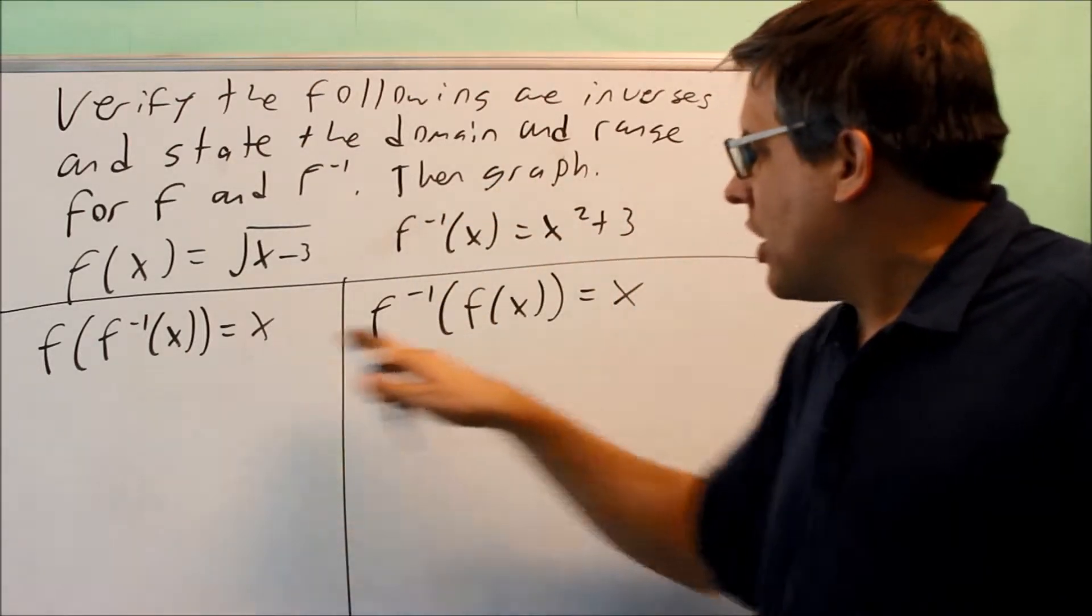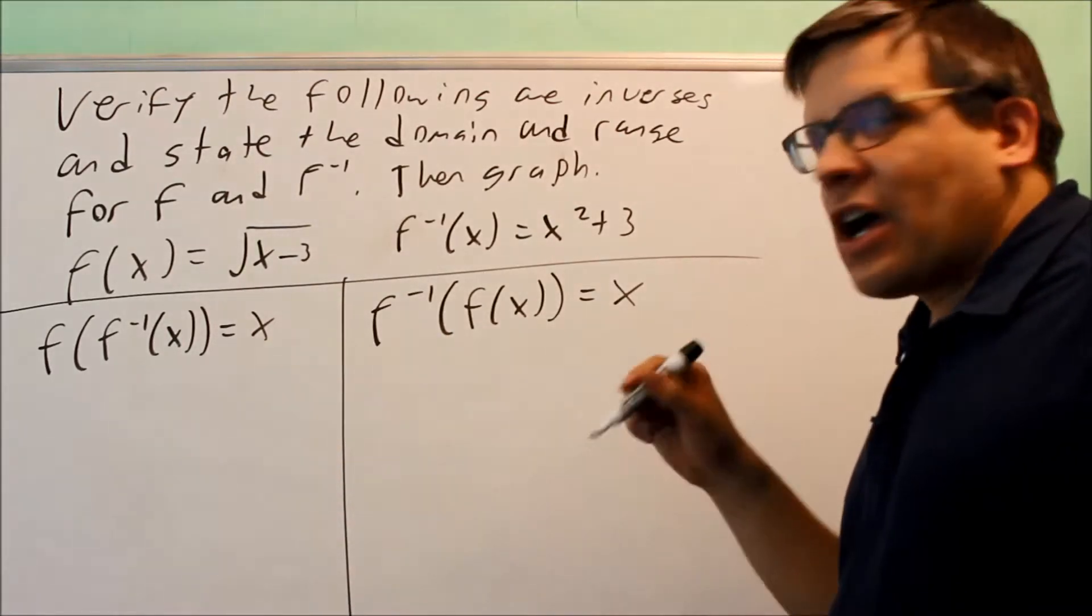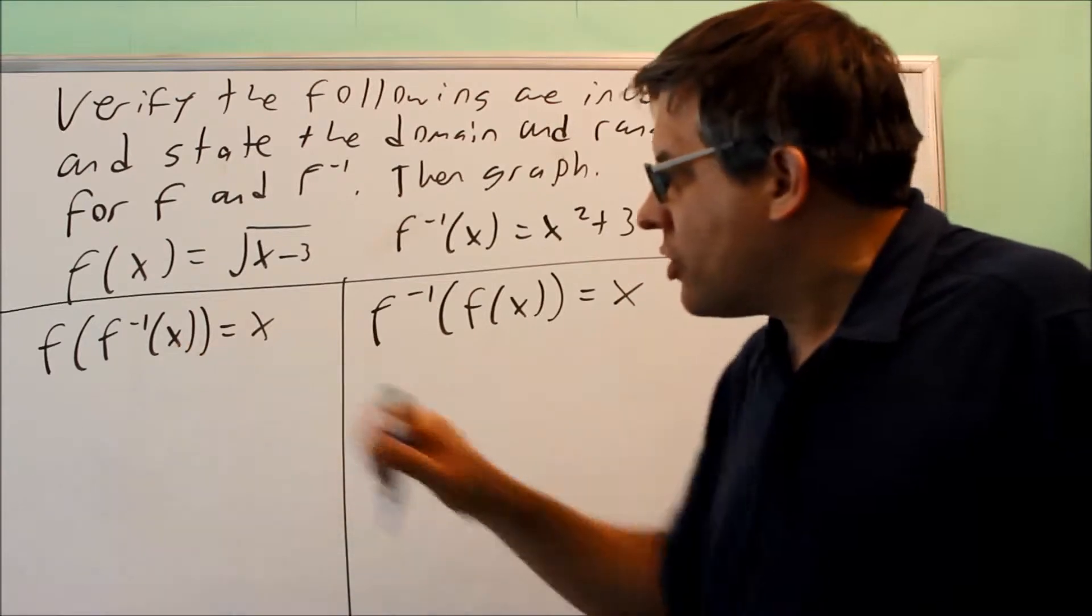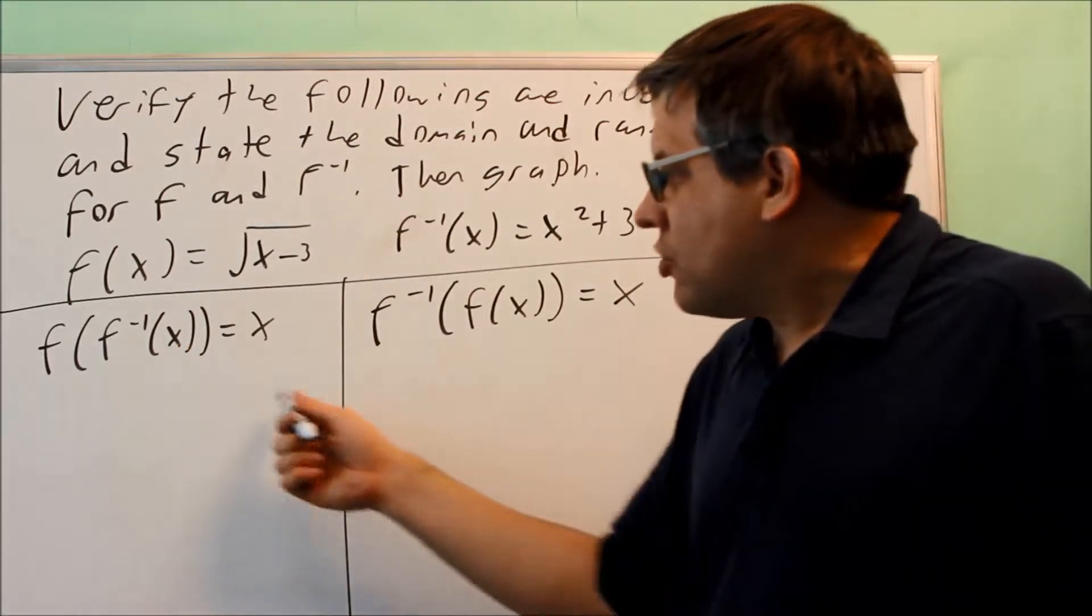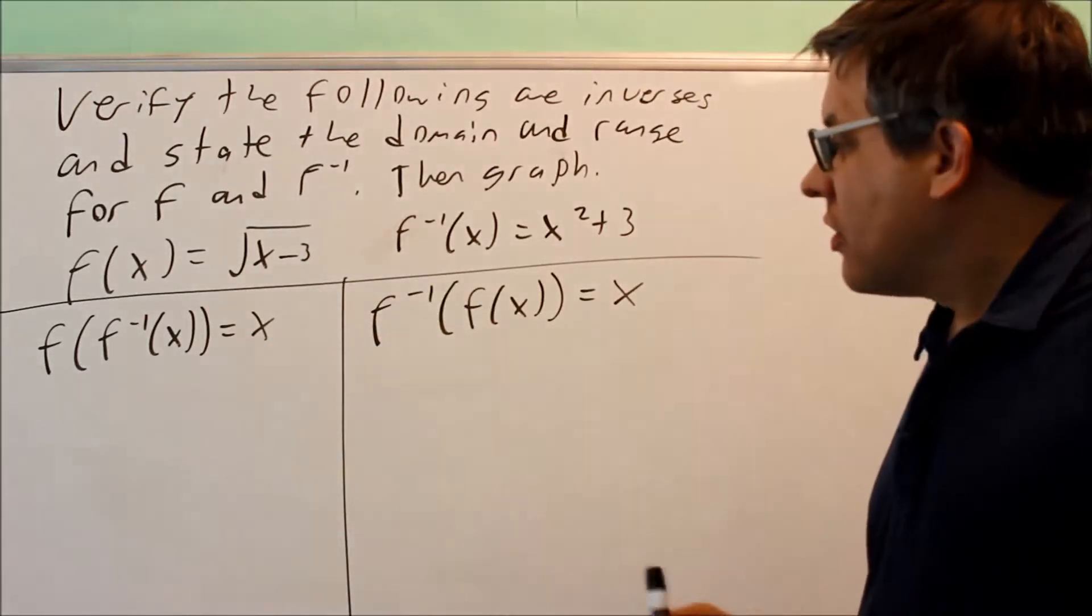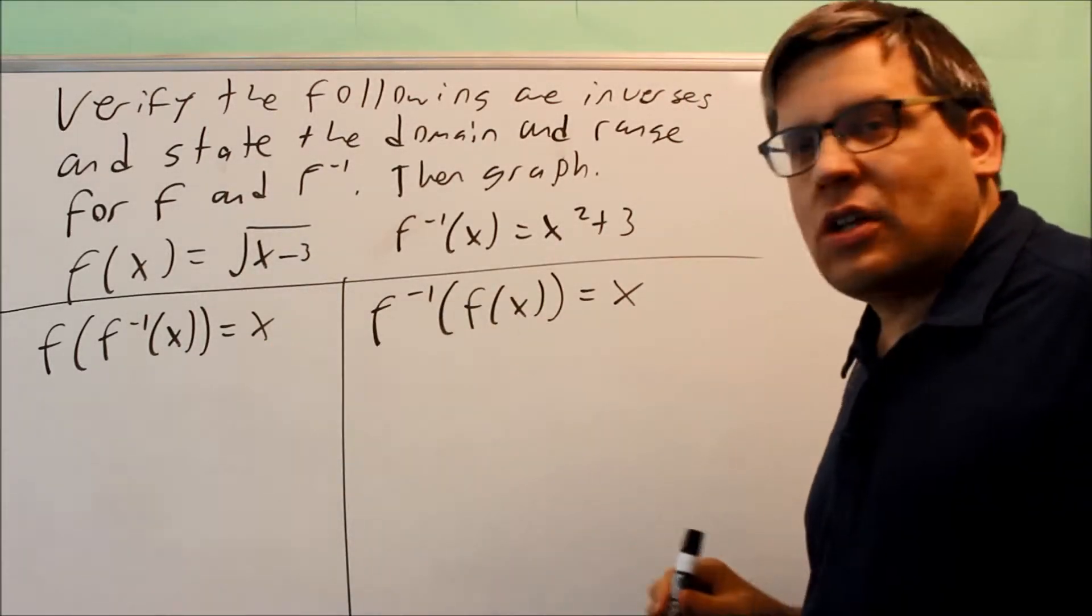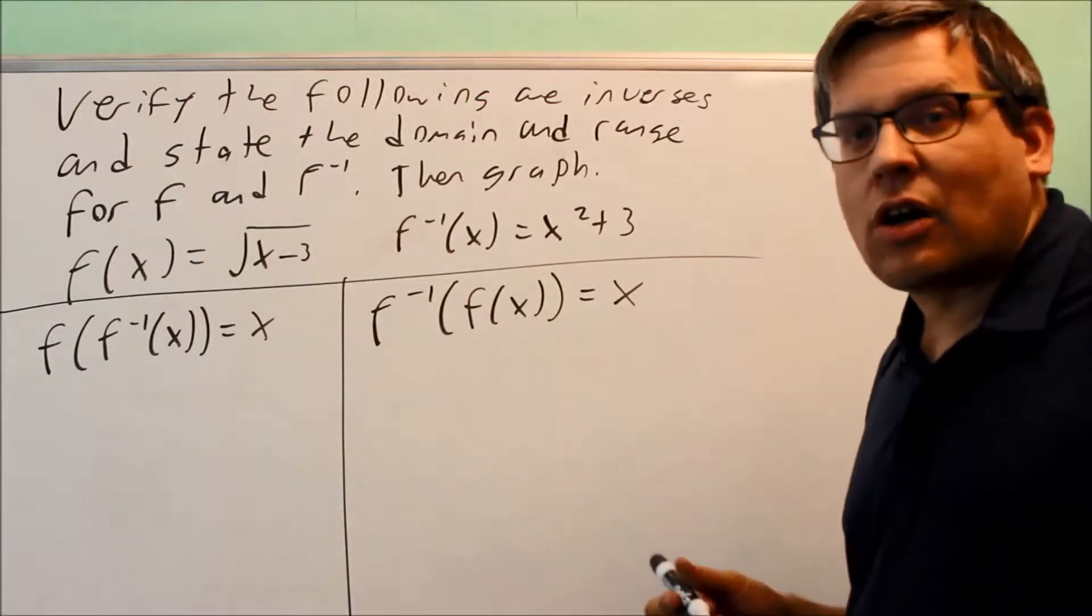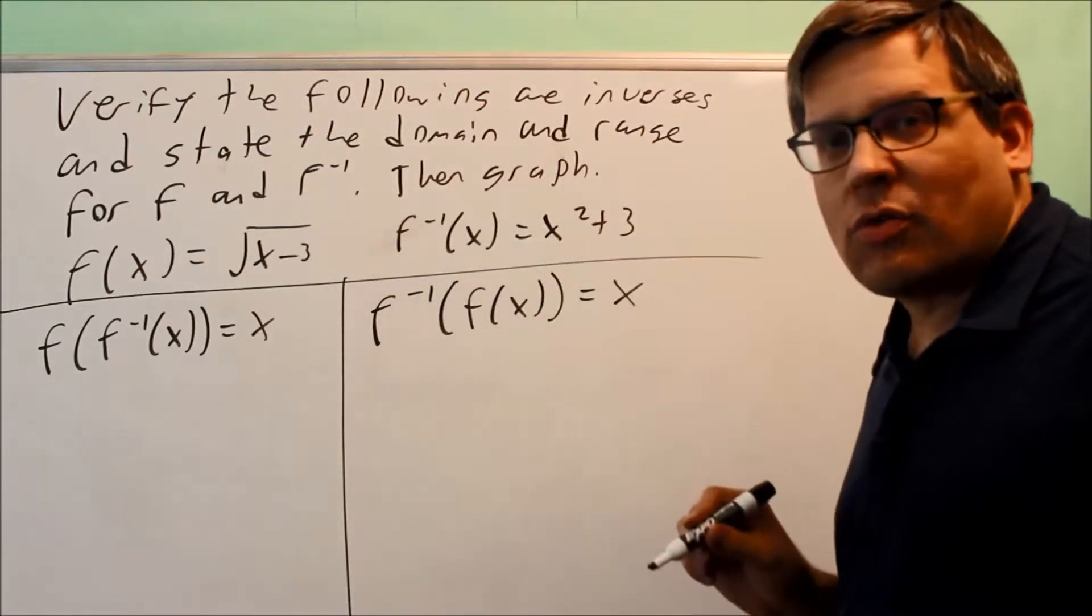So we have our test right here. It's exactly the same as f of g and g of f, except now we just have some different notation. Instead of the g, we've got the inverse in there. So we have the inverse inside and we have the inverse outside. Now we're going to go through both sides. And when we go through this and we get x for both sides, we verify that this is, in fact, the correct inverse that we have.